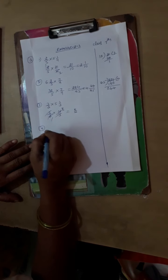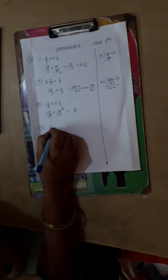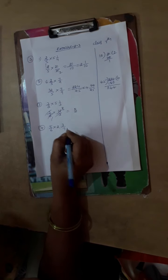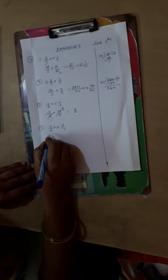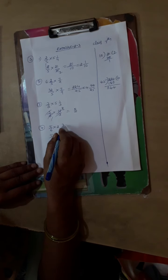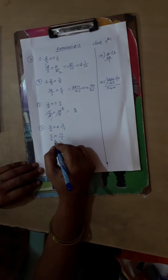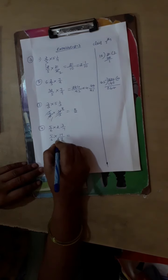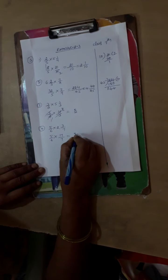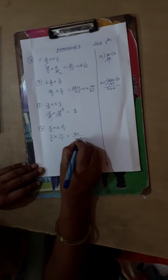Then 4th problem: 5 by 6 into 2 3 by 7. 5 by 6 into 7 times 2 is 14, 14 plus 3 is 17 by 7. So here also we cannot cancel anything. Then let us multiply: 17 times 5 is 85, then 6 times 7 is 42.